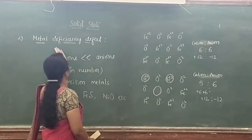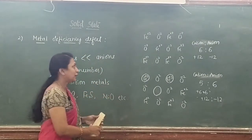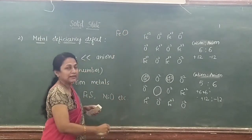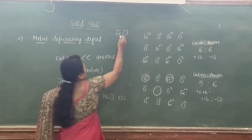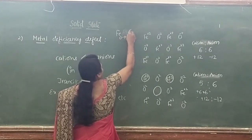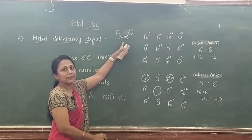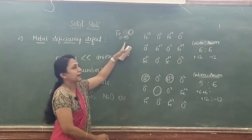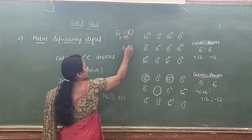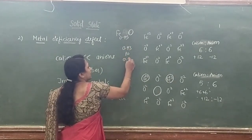That is the metal deficiency defect. Iron oxide (FeO) therefore exists as Fe₀.₉₅O — iron is less in number, not in a 1:1 ratio — and may vary from Fe₀.₉₃O to Fe₀.₉₆O.